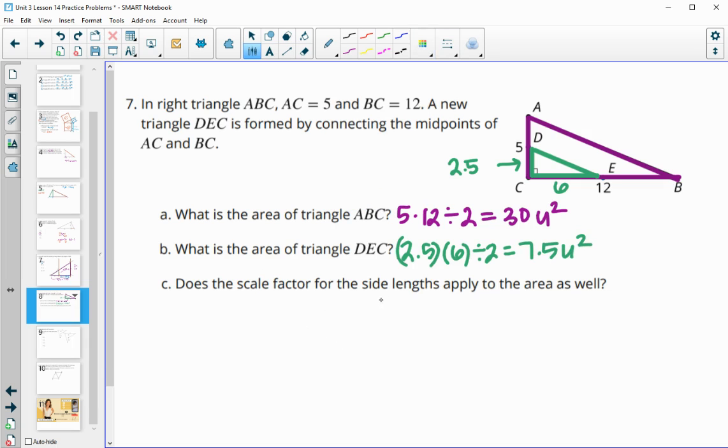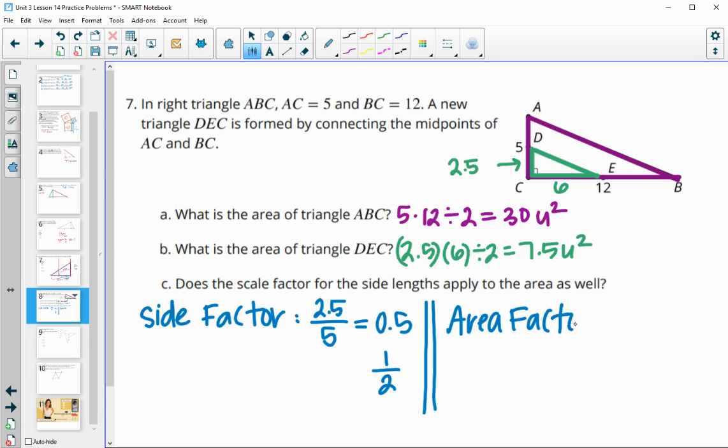Now this last question says, does the scale factor for the side lengths apply to the area as well? So let's look at the side length factor. The side factor is comparing a new length, so let's compare 2.5 to the original length of 5. And we know that equals a decimal of 0.5 or a fraction of 1/2. So there's our side scale factor. Then let's look at our area factor and see if it's the same. Our area will take the new area of 7.5 and compare that to the original area of 30. We see that this divides down to 0.25 or 1/4. We see that those are not equal. So the side and area factors are not equal or they do not apply.